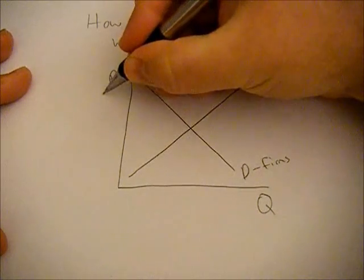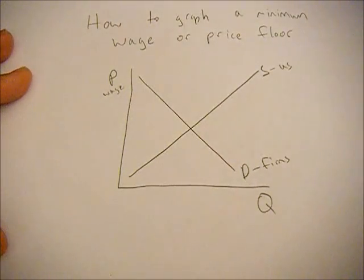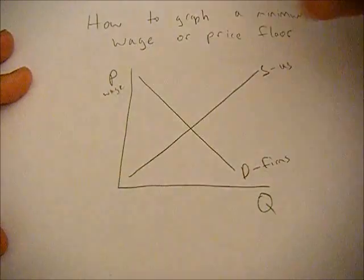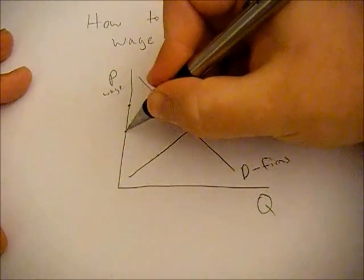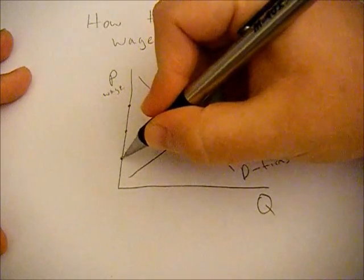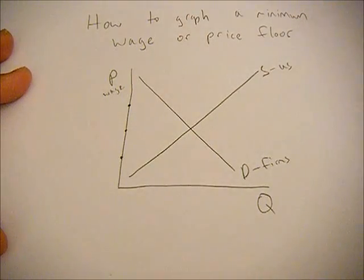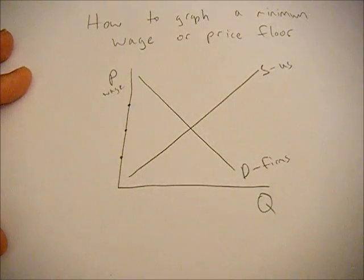So this price could also be marked as a wage. Now the way a minimum wage works is the government steps in and says you cannot pay someone lower than the minimum wage. So in essence it's a price floor meaning you cannot have a price under that amount.